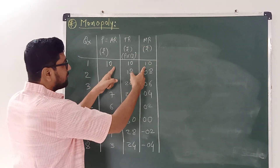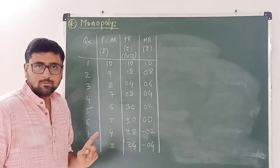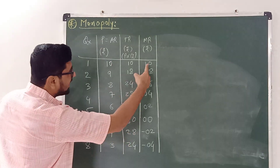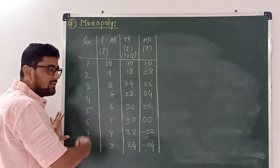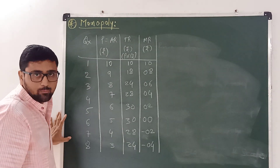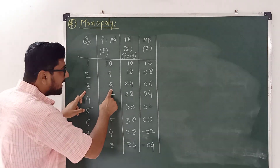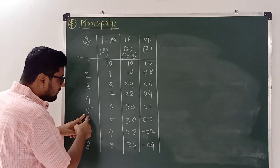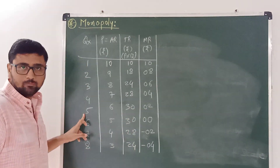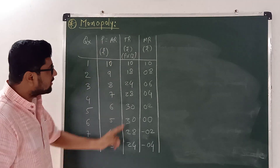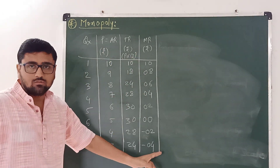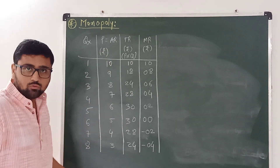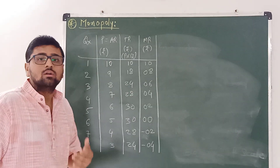If we observe average revenue and marginal revenue, they both start from the same point, and average revenue is always higher than marginal revenue at any level of output. For example, at quantity 3, average revenue is 8 and marginal revenue is 6; at quantity 5, average revenue is 6 and marginal revenue is 2. Both curves are downward sloping, which means that as output increases, average revenue and marginal revenue decrease.